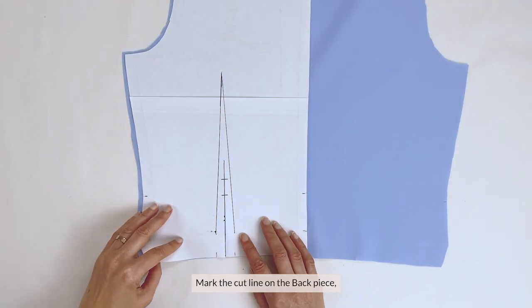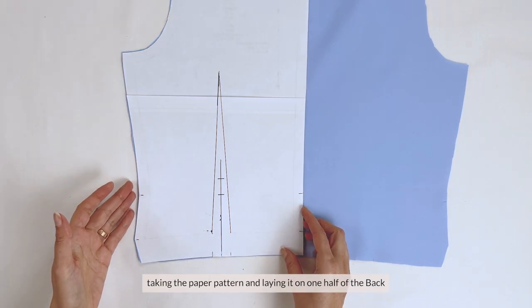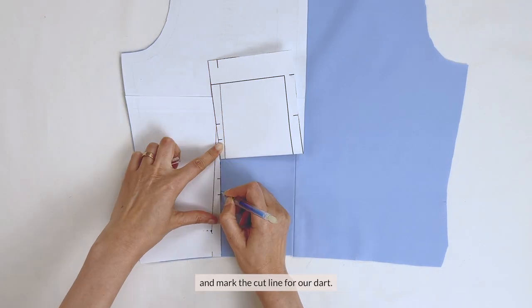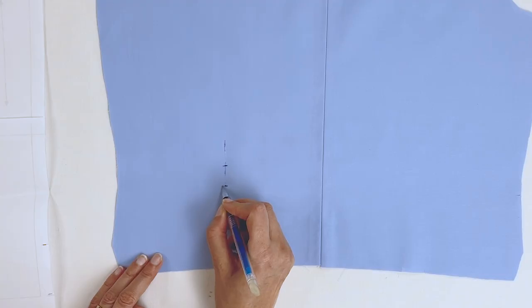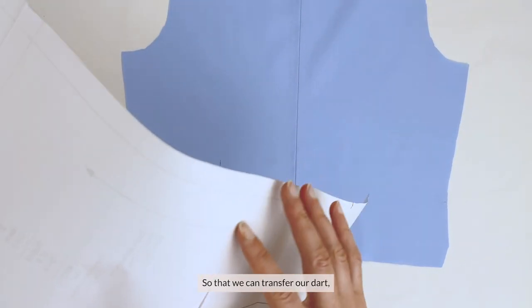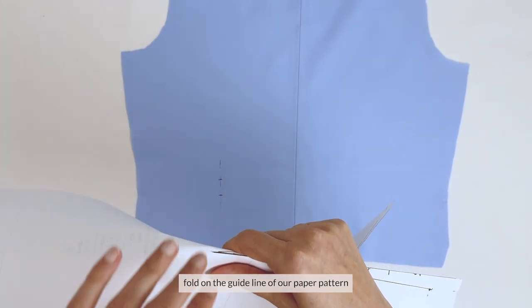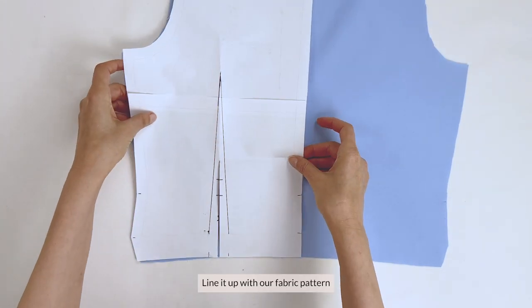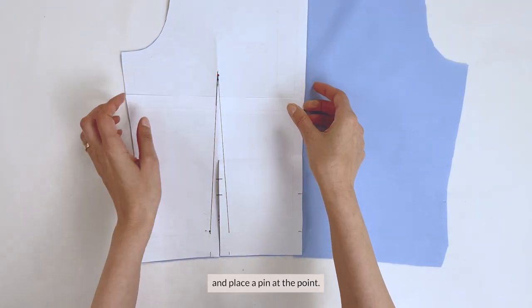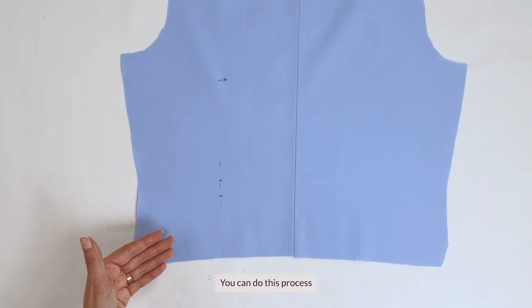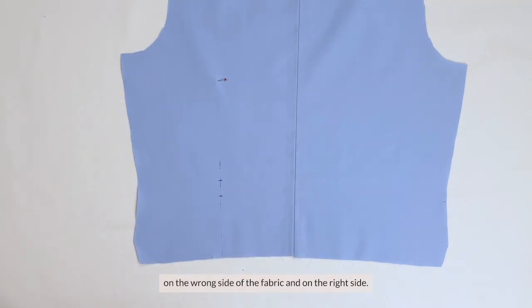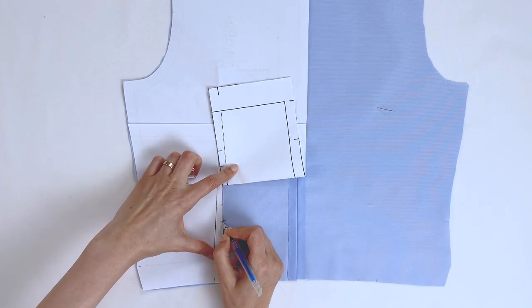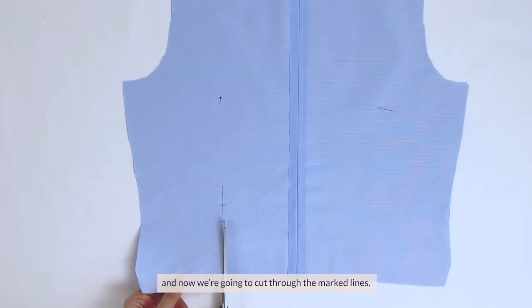Mark the cut line on the back piece, taking the paper pattern and laying it on one half of the back, take some chalk or disappearing ink pen, and mark the cut line for our dart. And so that we can transfer our dart, fold on the guideline of our paper pattern and make a small slit through the very point of the dart. Line it up with our fabric pattern and then place a pin at the point. You can do this process on the wrong side of the fabric and on the right side. I'll do this half on the wrong side. Like this, and now we're going to cut through the marked lines.